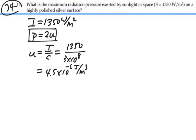Hence, the pressure is equal to 2 times the energy density, 2 times 4.5 times 10 to the minus 6, equals 9 times 10 to the minus 6 joules per cubic meter.